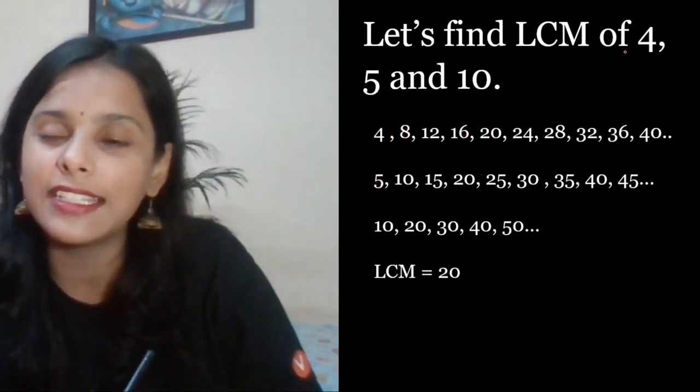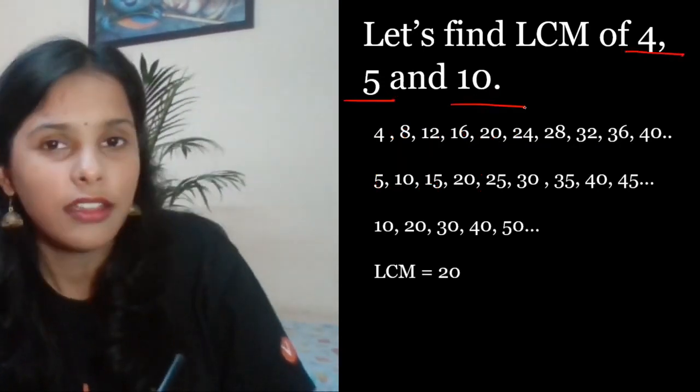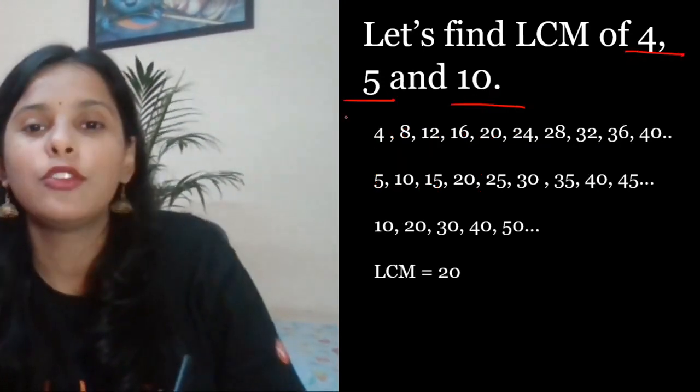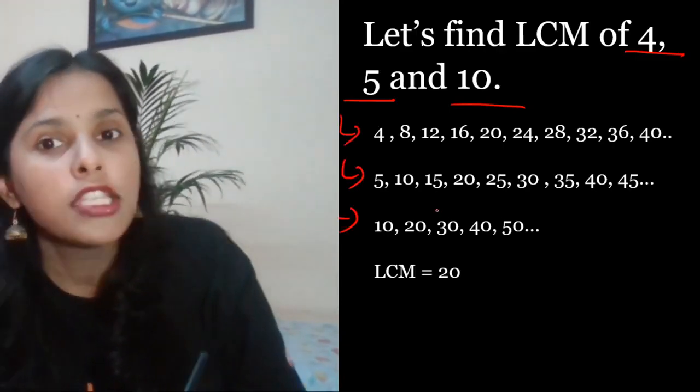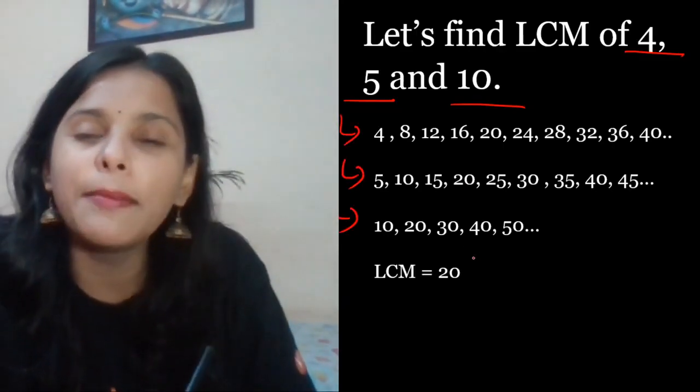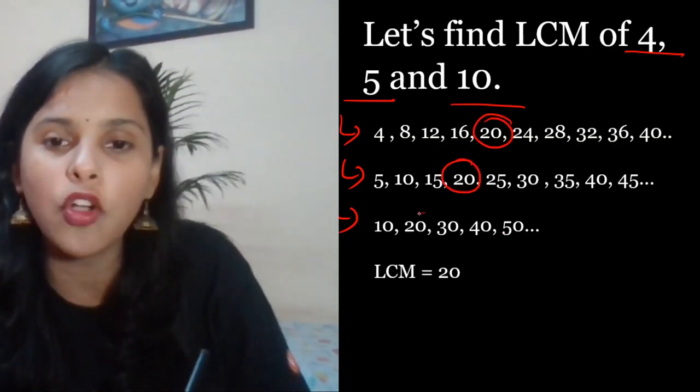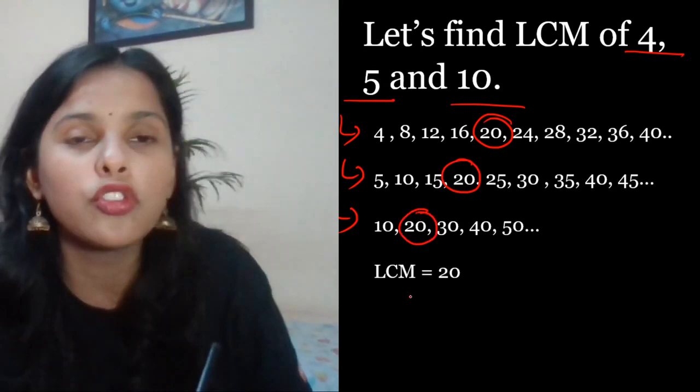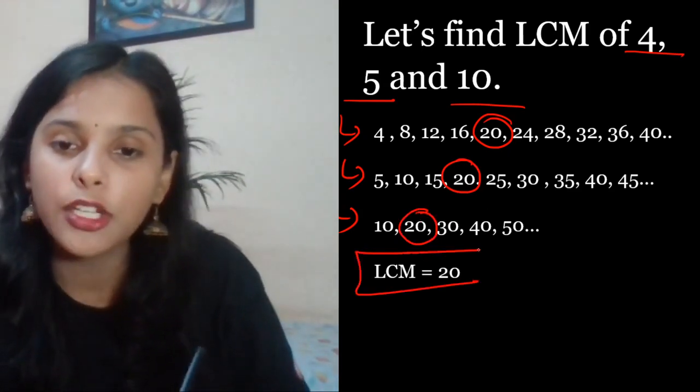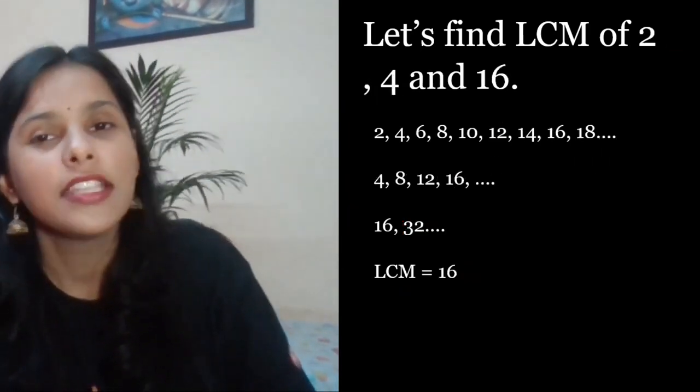Now let's understand by taking the 3 numbers: 4, 5, 10. Kuch nahi, 4 ke table, 5 ke table, 10 ke table. Sabse chhota common multiple koon hai aapka? Kuch nahi. Yeh 20 dikh rahe hai mujhe common tieno mein, woh bhi subse chhota. That is nothing but 20 is the LCM.